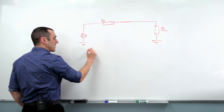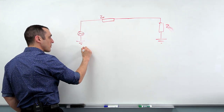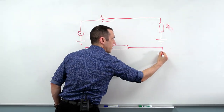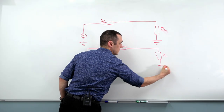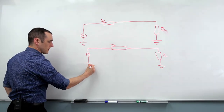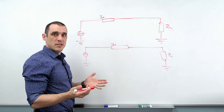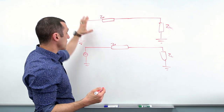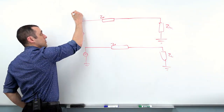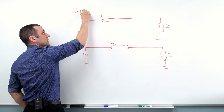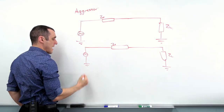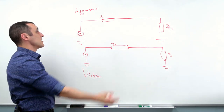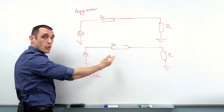Then we have a second line, which could also be connected to a driver, with some impedance Z-sub-zero, also terminated at some load connected to ground. To describe crosstalk between these two lines, we first have to describe how noise is coupled from one line to the other. We have an aggressor line and a victim line, and as the names suggest, the aggressor is going to induce some noise on the victim.